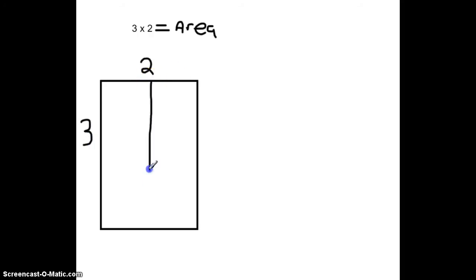The length of this side would be like cutting it into two equal pieces, this side into three equal pieces, and when we multiply these together, we find that the total area of this shape is six equal squares.